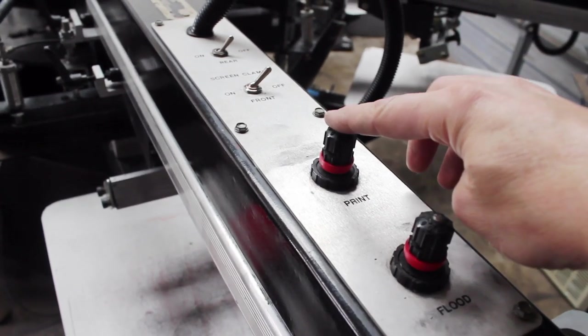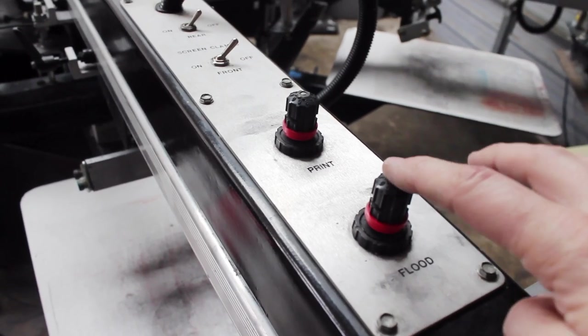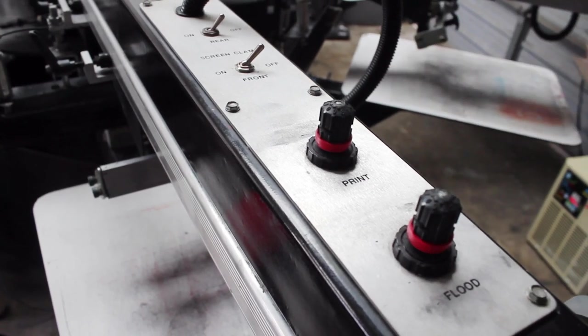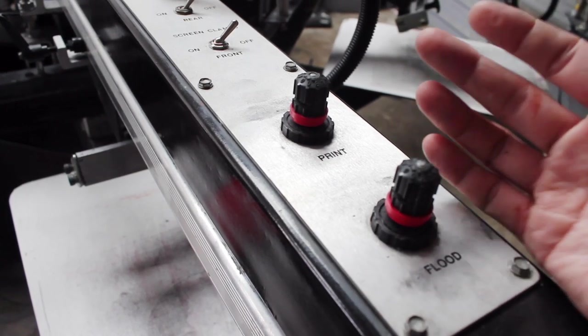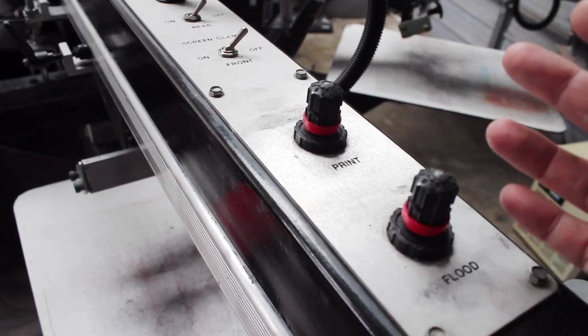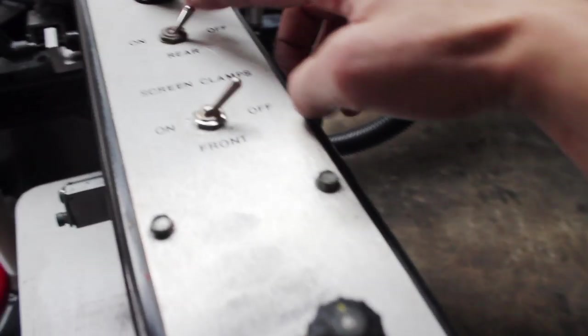Moving on to the heads, we have the print flow control and then the flood. If you turn these things counterclockwise, it will increase how fast it prints or floods, so you can play with those to get the ideal setting for you.